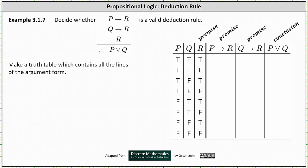We're asked to decide whether the argument — if p then r, if q then r, r therefore p or q — is a valid deduction rule. We will answer the question by making a truth table which contains all the lines of the argument form.